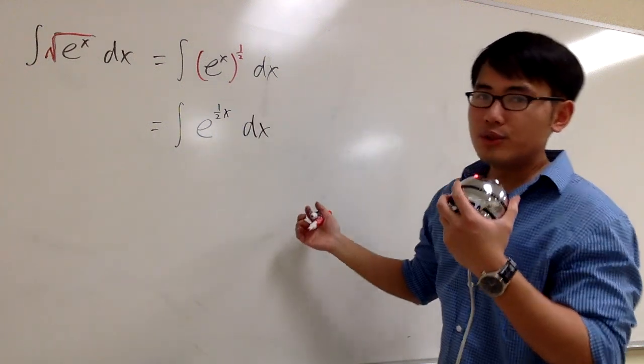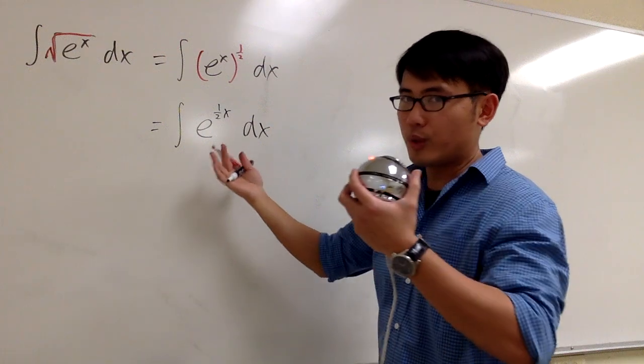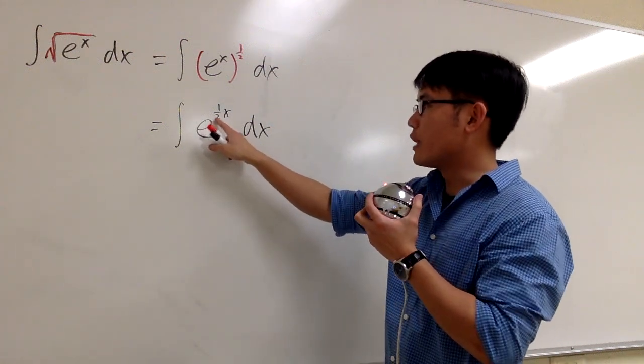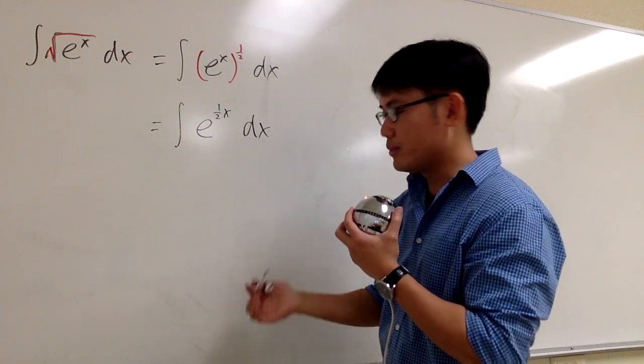And here we can just use a u substitution, let u equal 1 half x. But then the quick way to do it is just look at what's the derivative of 1 half x, which is 1 half. You divide it by 1 half, which is you multiply by 2.